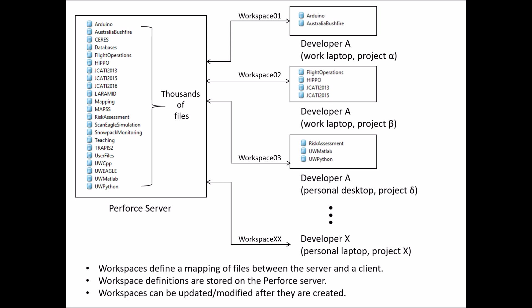Before we jump into how to do that, it might help to remember this diagram we developed in an earlier video. It basically outlined the architecture of a Perforce server, a bunch of clients with files on their local machines, and the associated workspaces — the mapping between the files. The Perforce server contains thousands of files for many different projects, and each developer can have multiple workspaces on one or more different machines. We previously looked at developing and changing a workspace we called Project Alpha, where a developer might only want two or three depots from the large Perforce server.